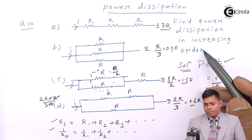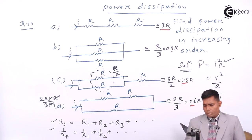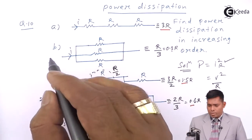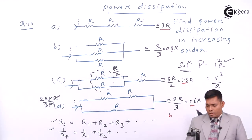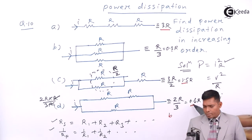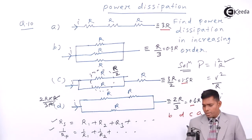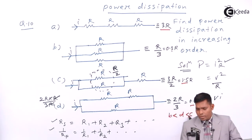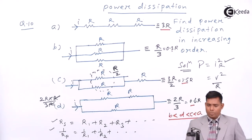We have to write in increasing order, starting with the lowest value and going to the maximum. So in increasing order: B comes first (least), then D (0.67R), then C (1.5R), and finally A (3R). So the answer is B < D < C < A.